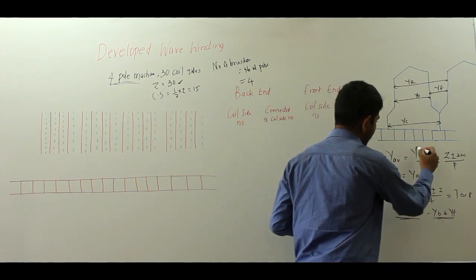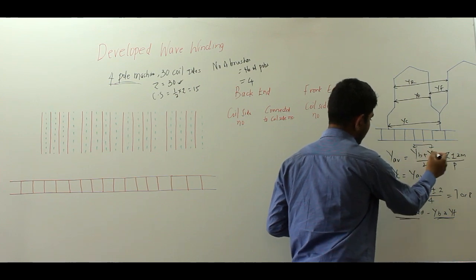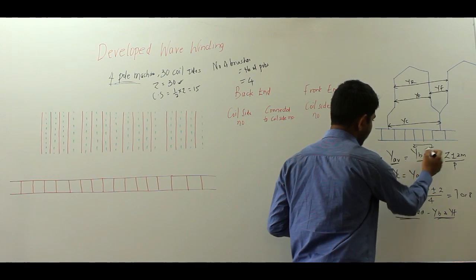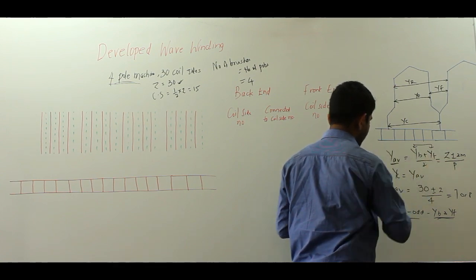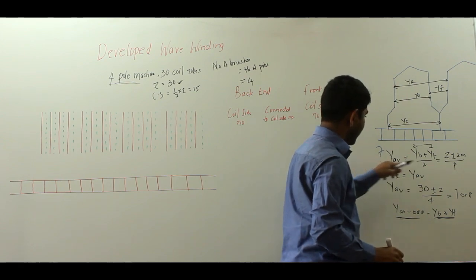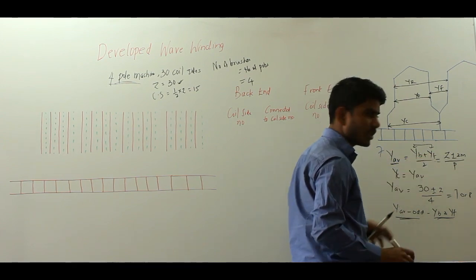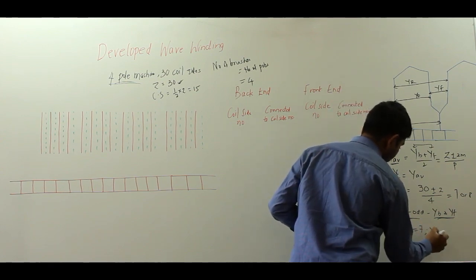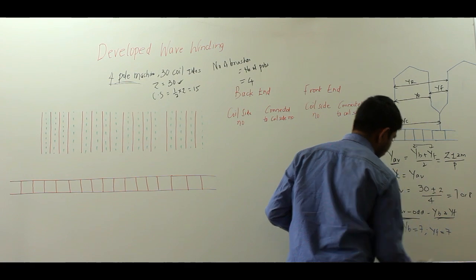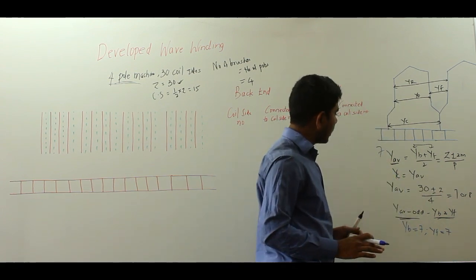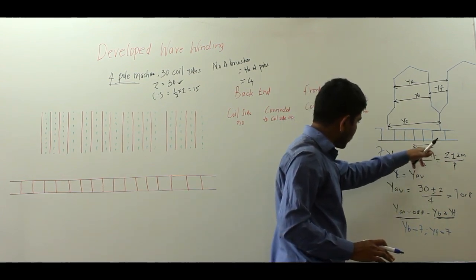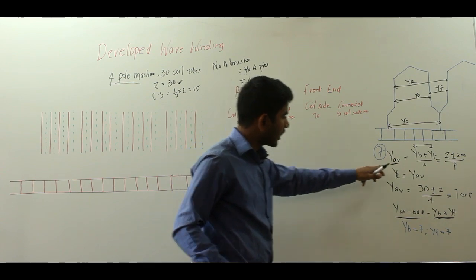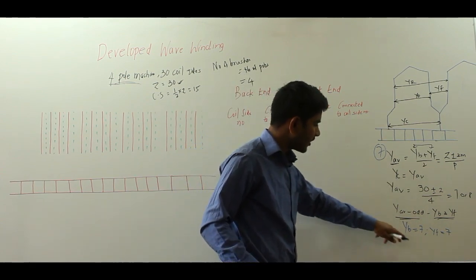So if Y_average is odd, YB and YF should also be odd. If we take Y_average to be 7, then YB and YF must also be 7, since they must be odd and their average upon 2 must give you 7. So YB equals 7 and YF equals 7.